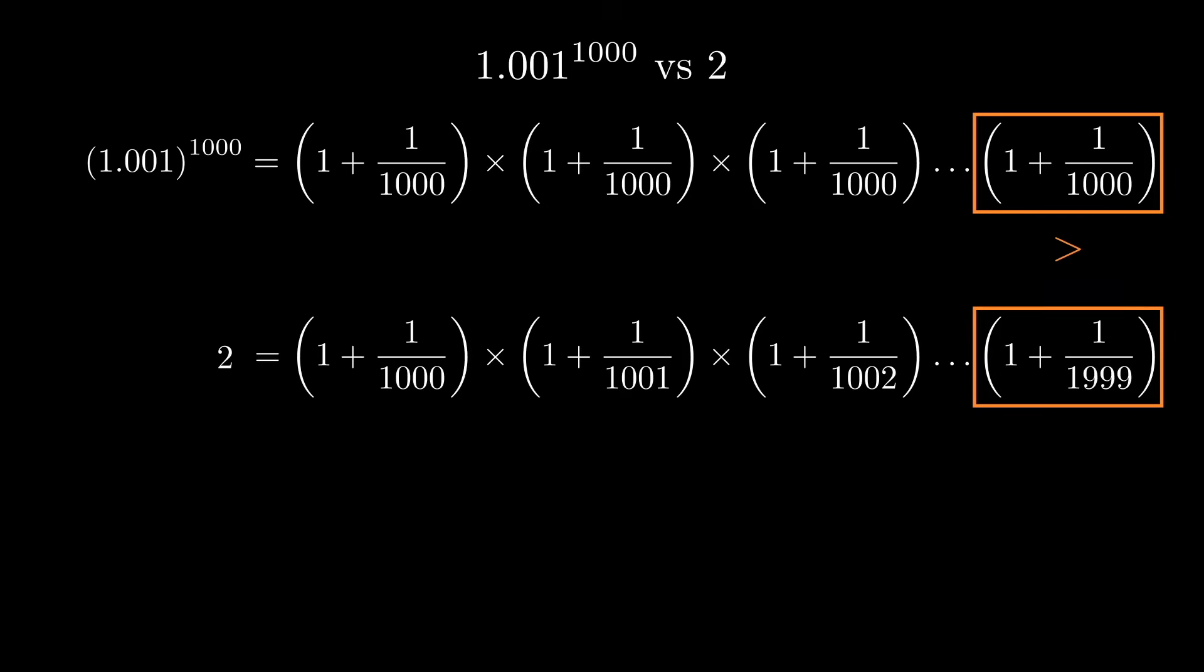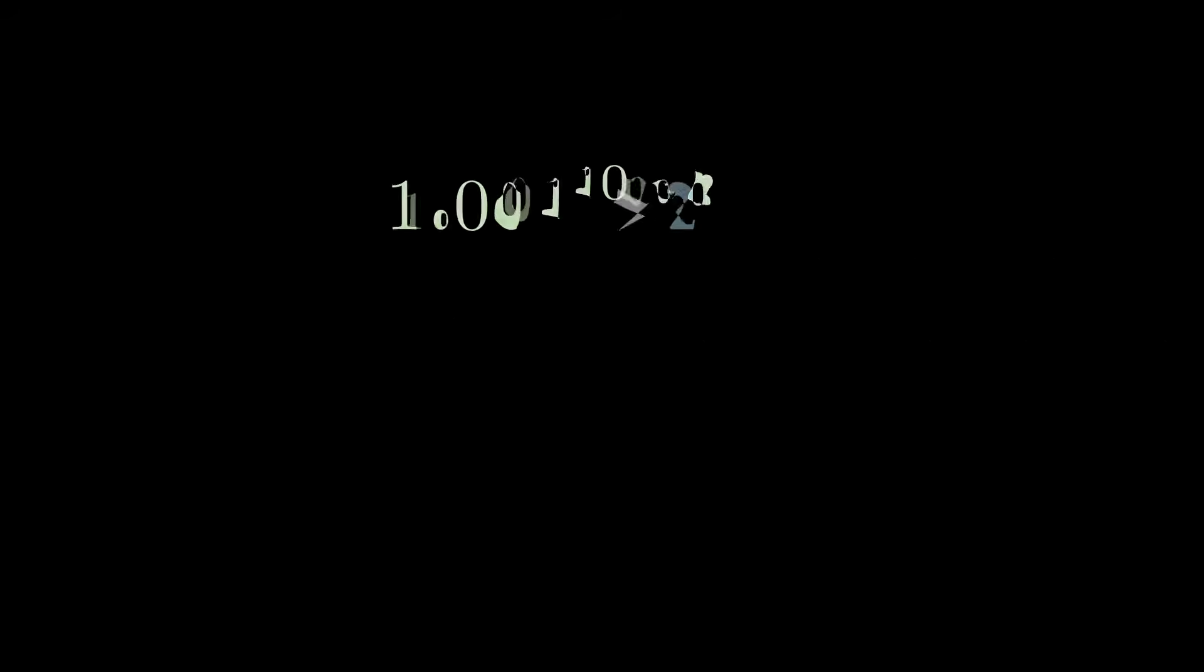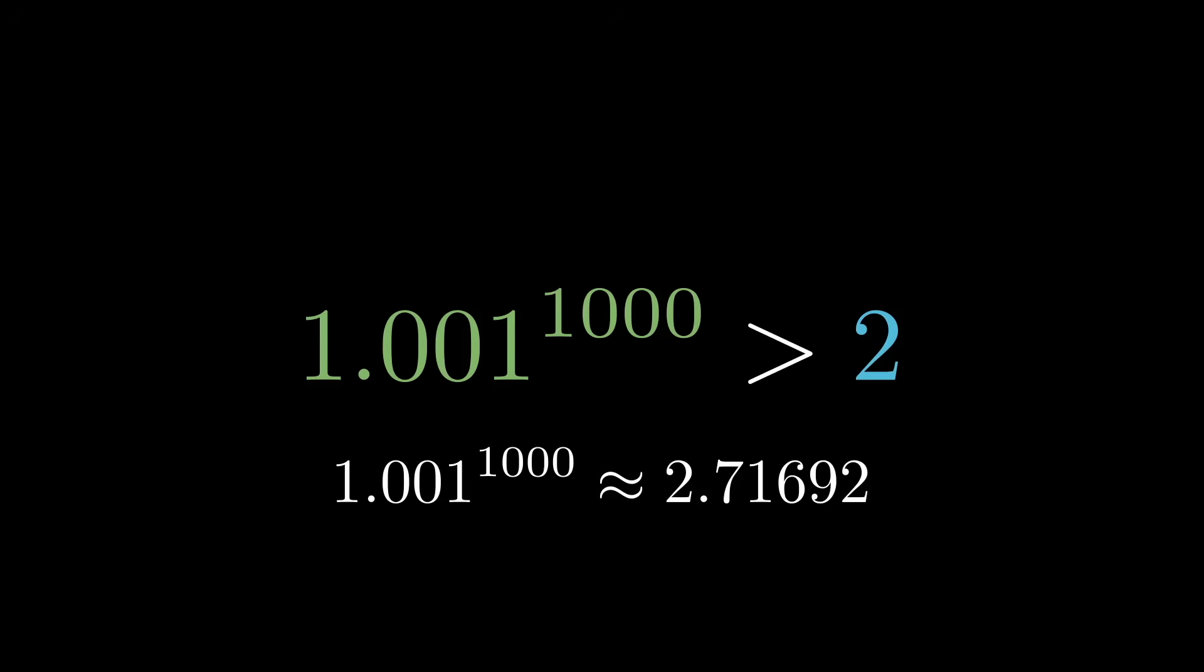And hence, our first equation must be greater than or equal to our second equation since we're comparing every single pair. Or in other words, we can conclude that 1.001 to the power of 1,000 is indeed larger than 2.